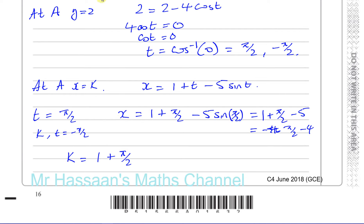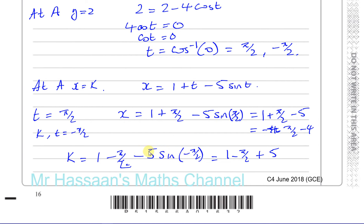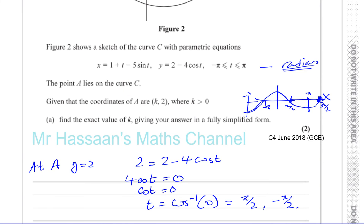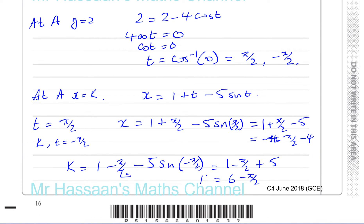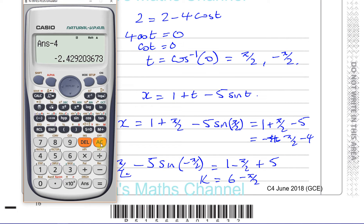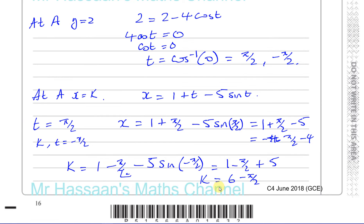So k must come from t equals minus pi over two. Substituting: x equals one minus pi over two minus five times sine of minus pi over two. Sine of minus pi over two is minus one, so minus five times minus one gives plus five. Therefore x equals one minus pi over two plus five, which equals six minus pi over two. That's our exact value of k.